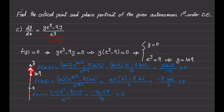For the critical point y equals ln(9), since everything is moving away from it, we call it a repeller or unstable critical point. For y equals zero, the arrows are directed toward it, so we call y equals zero an attractor or stable critical point.